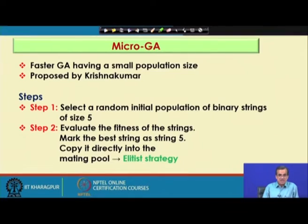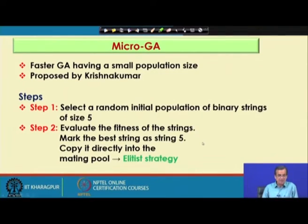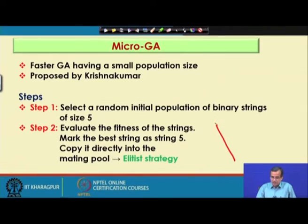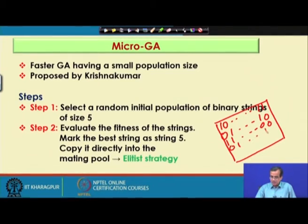In binary-coded GA, what we do is try to form the mating pool starting from the initial population. In the mating pool, we try to copy all good solutions. Out of 5, we try to find out which one has the best fitness — supposing that I am solving one maximization problem. That particular best string is marked as string 5 and copied directly into the mating pool. For example, the initial population could be: 1011, 0110, 1100, 0111, 1101, with fitness values f1 through f5.